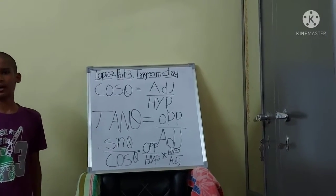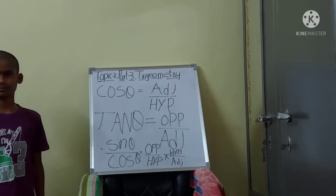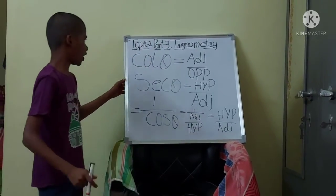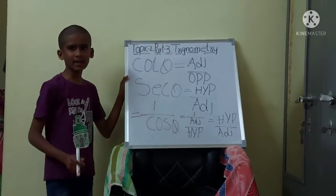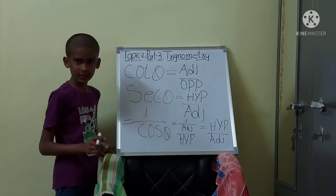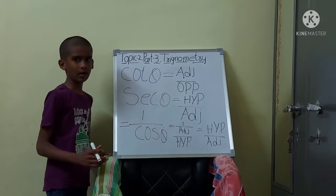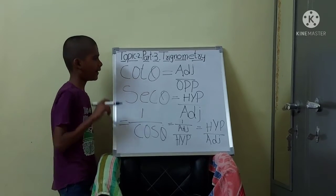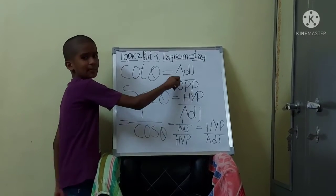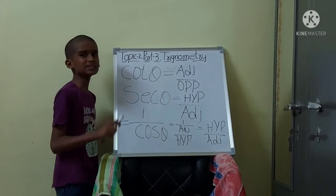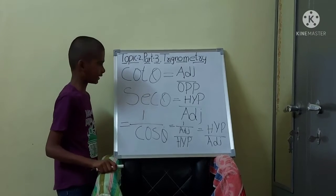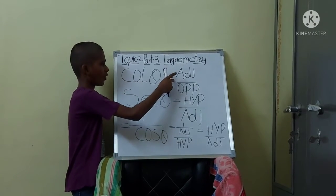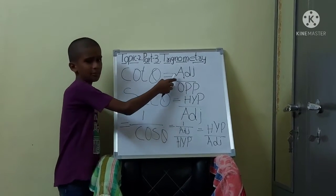Now we will see about cot theta. Cot theta is 1 divided by tan theta. Since tan theta is opposite by adjacent, cot theta equals adjacent by opposite. That also means cot theta equals cos theta divided by sin theta.